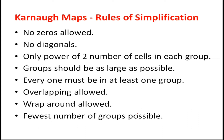Grouping should be as large as possible. Whenever we are trying to group cells, check how many ones are present adjacent to each other. If there are eight adjacent ones, group them; if not, try four; if not, try two. Everyone must be in at least one group — ensure that every cell containing a one is grouped in at least one group. Overlapping is allowed and wrapping around is also allowed. Fewest number of groups should also be used in simplification of the Boolean expression.